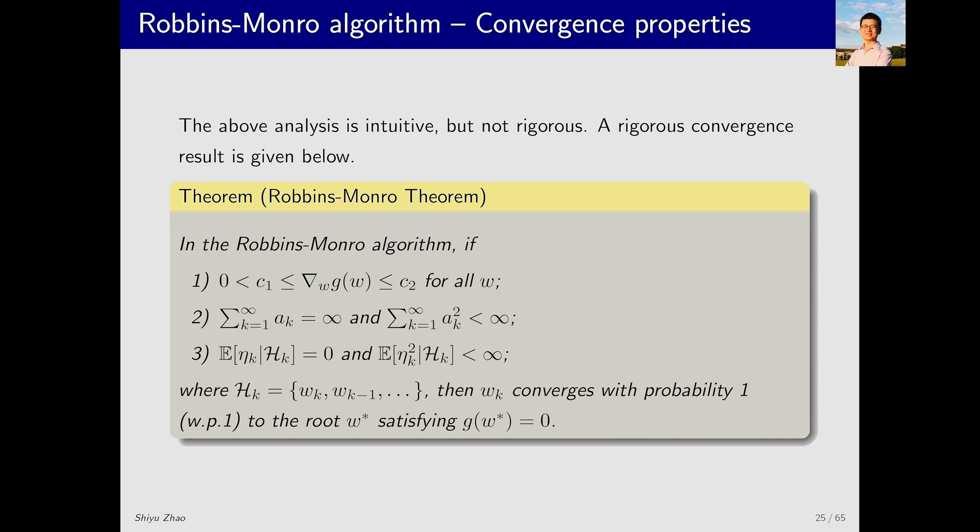The previous example provided an intuitive explanation of why the Robbins-Monro algorithm can converge. Now we will give a more rigorous mathematical description, which is this theorem. This part will be more mathematical. If you are not interested, you can skip it.